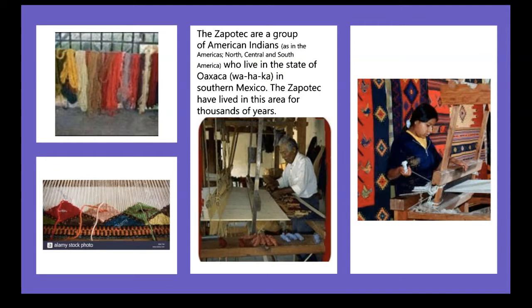The Zapotec are a group of American Indians who live in the state of Oaxaca in southern Mexico. The Zapotec have lived in this area for thousands of years. Here you can see that these rugs are made by humans, not by machines. So when actual people make these rugs, it takes much longer and it's that much more special because you're not able to make as many of them as quickly.